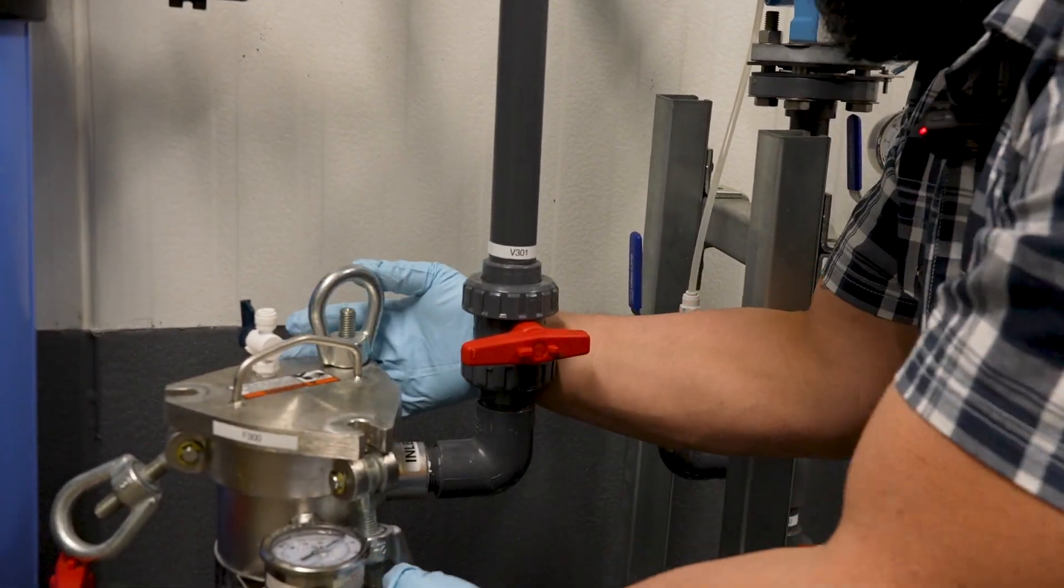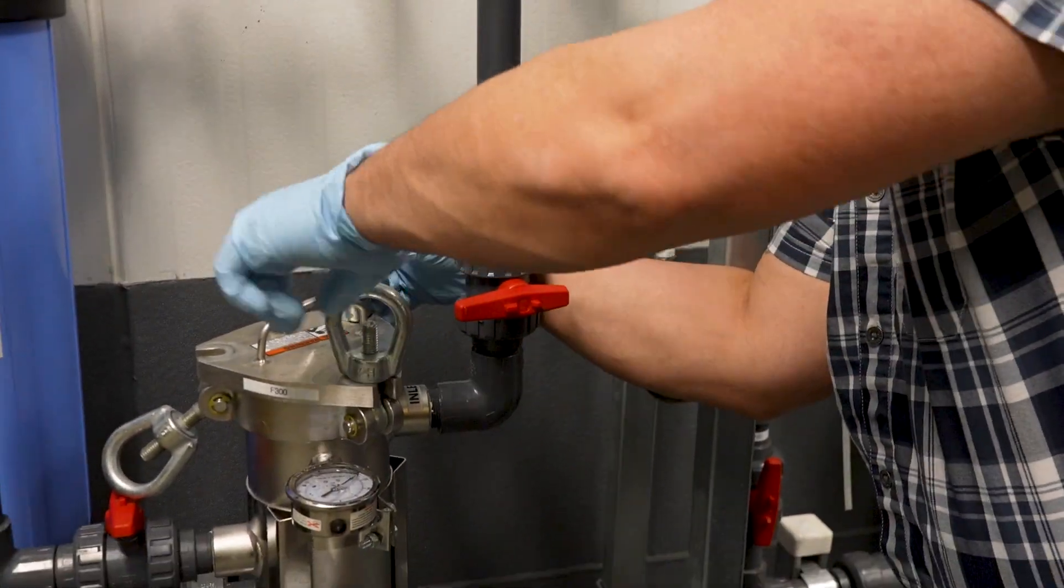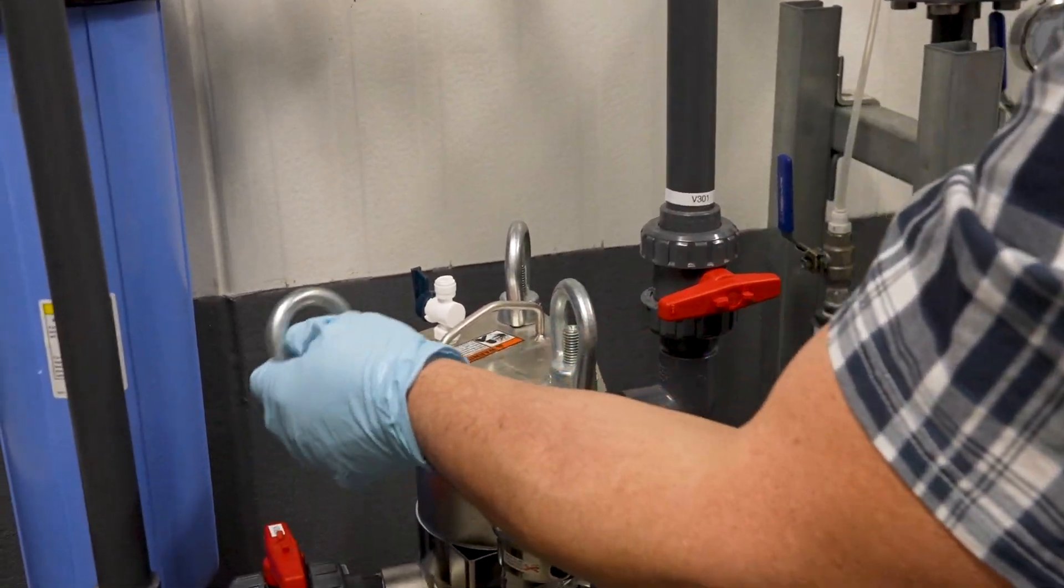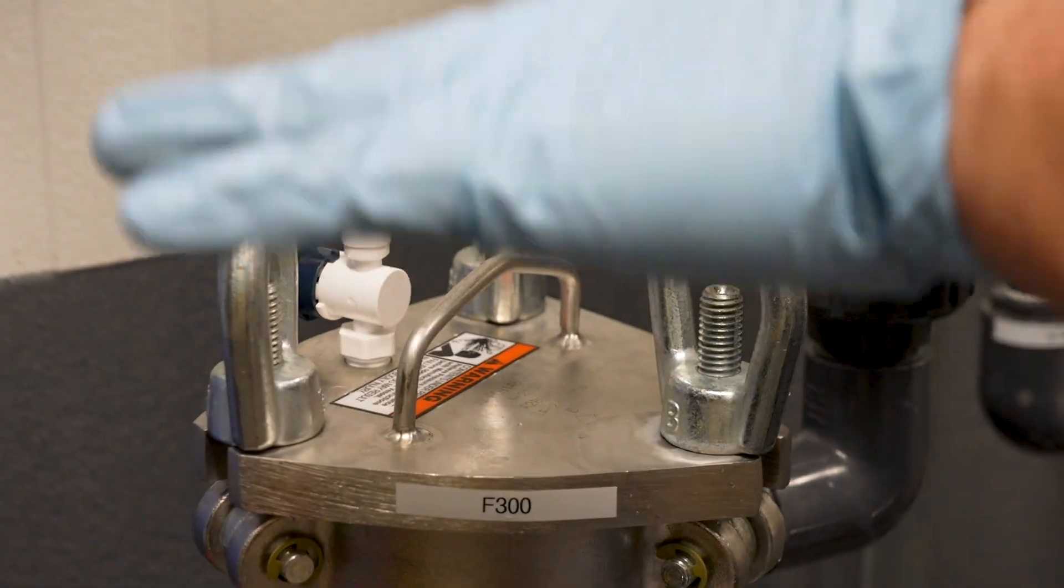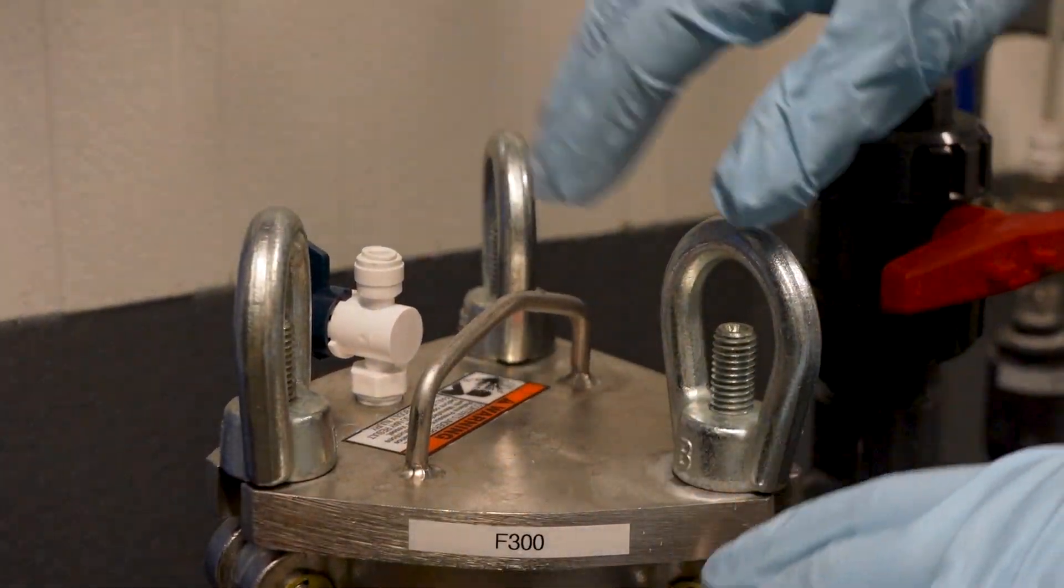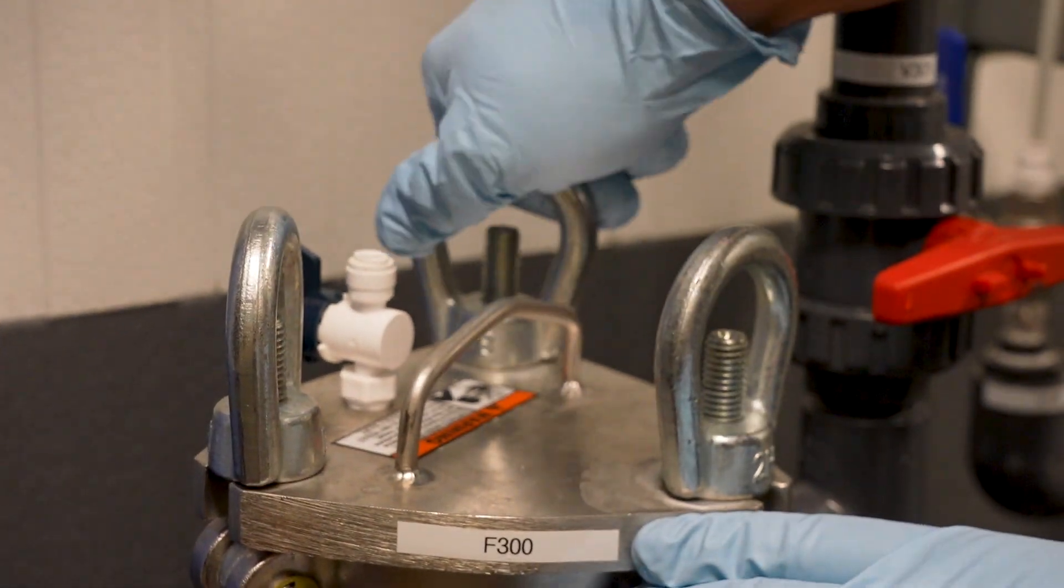Then we begin putting the clamps back on. When you're tightening these you want to tighten them up evenly like you would a car tire so the whole thing gets pushed down at once. If it's crooked you'll get water leaking up the side. So good and snug, hand tight.